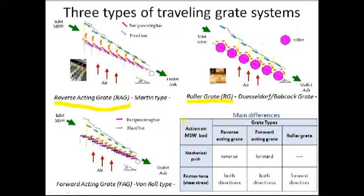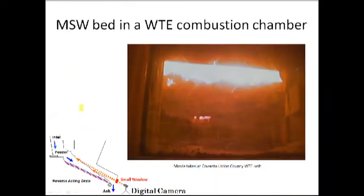Reverse acting grate is the bar moves opposite direction to the MSW flow. But the forward acting grate is the moving bar is almost same direction to the MSW flow.